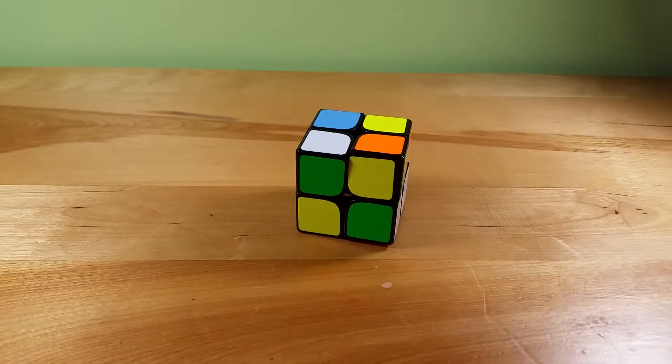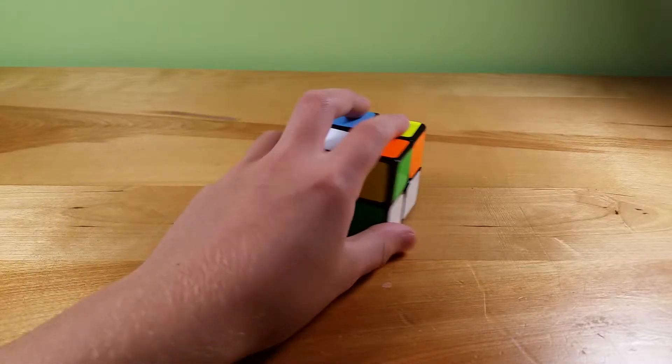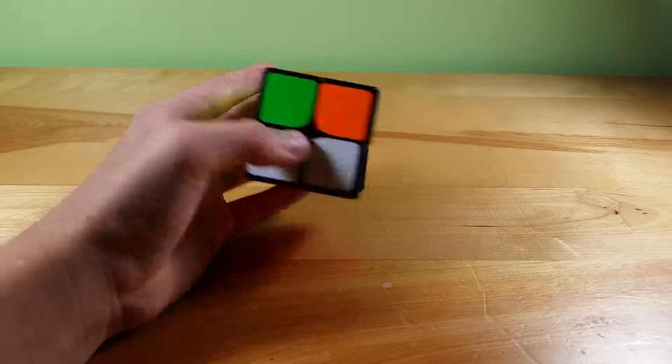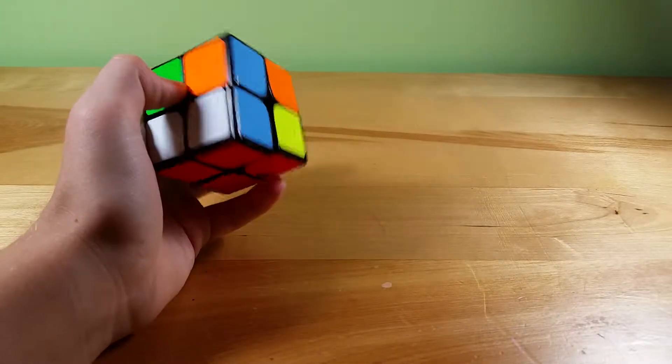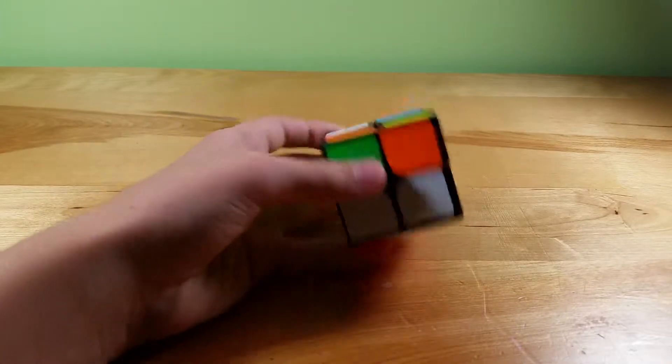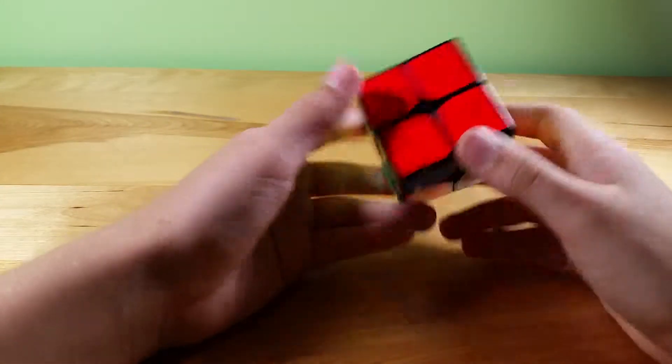Okay, so I'm going to start with 2x2. So I use Ortega, CLL, and layer by layer. I don't know full CLL, so I won't be using that that much. So this is the first scramble. I'll have all the scrambles in the description, or a comment, because they can be taken down from the description.